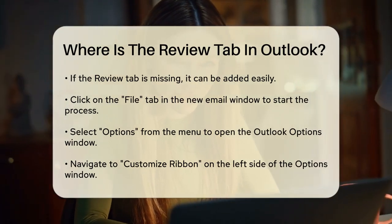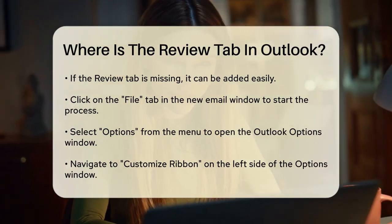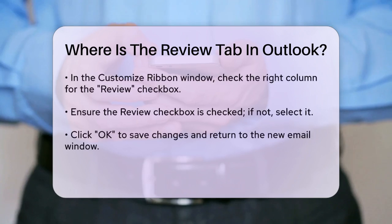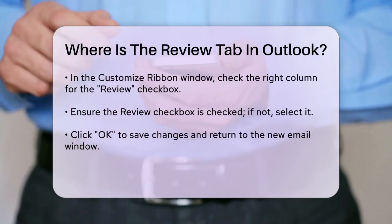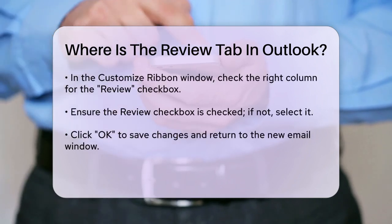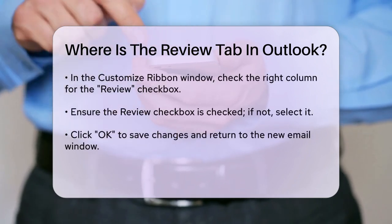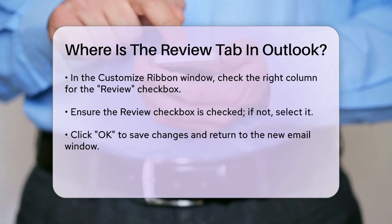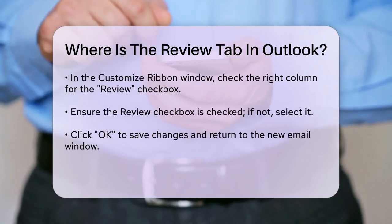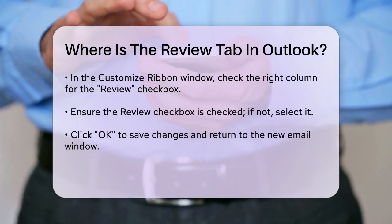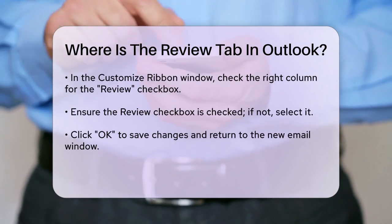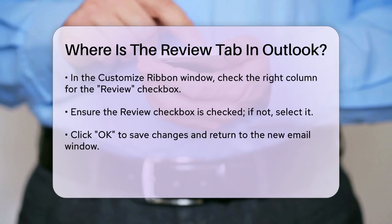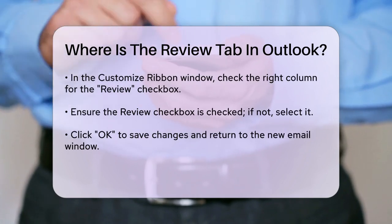In the Customize Ribbon window, you'll see two columns: one for the main tabs, and one for the available tabs. On the right column, find the Review checkbox and make sure it's checked. If it's not checked, click on the box to select it, then click OK to save your changes.